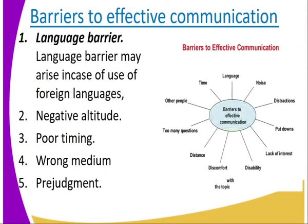When we talk about the barriers to effective communication, one of them is the language barrier. This is where the receiver and the sender of the message differ in the language they are communicating — one is using the mother tongue and the other is using a foreign language. The person receiving the information does not understand the foreign language, so you require an interpreter for effective communication. Language barrier is one of the factors that limits the effectiveness of communication.